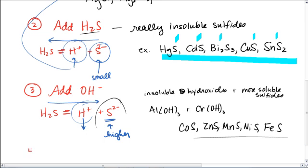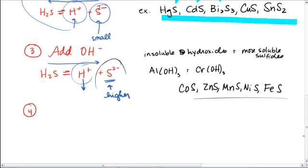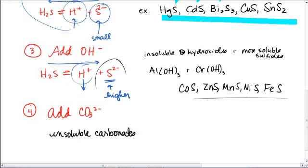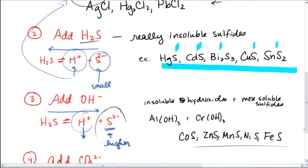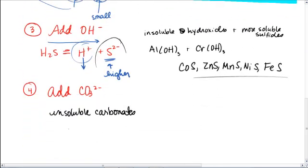All right, another thing we could do to allow stuff to precipitate out is to add something with carbonate in it. And what that's going to cause to precipitate out are the insoluble carbonates. Again, this goes all back to our solubility chart. Well, of the group that's left, calcium, barium, strontium, magnesium, sodium, and potassium, three of those are insoluble. And that's the barium carbonate, calcium carbonate, and the strontium carbonate. And so these will precipitate out when you add carbonate ions.